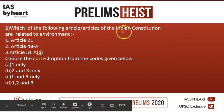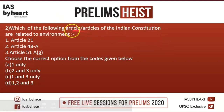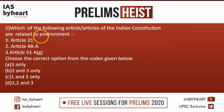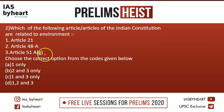Our second question: which of the following articles of the Indian Constitution are related to environment? Option 1: Article 21. Option 2: Article 48A. Option 3: Article 51AG. Article 21 is our fundamental right, Article 48A is our directive principle of state policy, and Article 51AG is our fundamental duty.